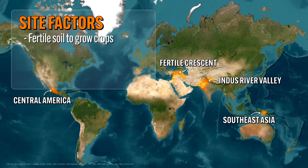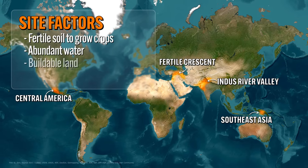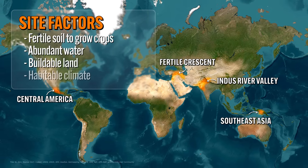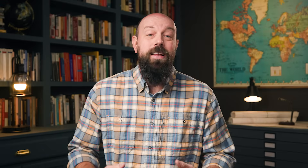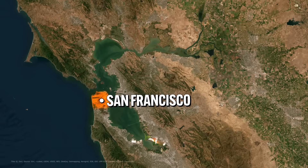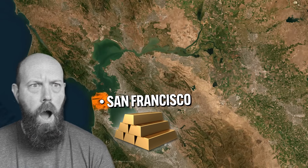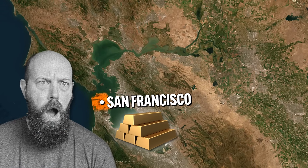Site factors include things like fertile soil to grow crops, abundant water, buildable land, and habitable climate. And it's not just ancient cities that developed because of favorable site factors. San Francisco was established as an American city in the 19th century precisely because large amounts of gold was found under its surface.